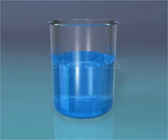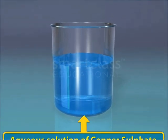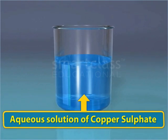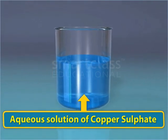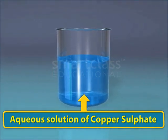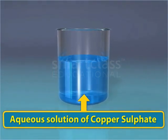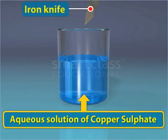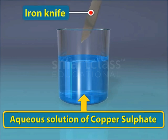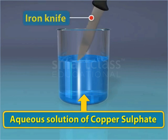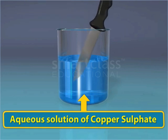Take a small quantity of an aqueous solution of copper sulfate, which is blue in color, in a beaker. Then dip an iron knife in the solution and wait for a while.